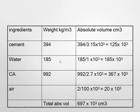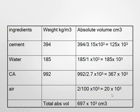Now calculate the absolute volumes. Cement: weight 394 kg, specific gravity 3.15, absolute volume = 394 / 3.15 × 10⁻³ m³. Water: weight 185 kg, specific gravity 1.0, absolute volume = 185 × 10⁻³ m³. Coarse aggregate: weight 992 kg, specific gravity 2.7, absolute volume = 992 / 2.7 × 10⁻³ m³. Air content is taken as 2%, giving 20 × 10⁻³ m³. These give the total absolute volume of the concrete mix. This completes the ACI mix design method.